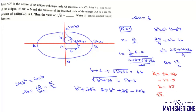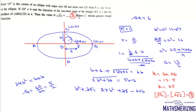We need the greatest integer function (floor function) of √K = √65. Since √65 ≈ 8.06, the floor of √65 is 8. So the answer to this question is 8.